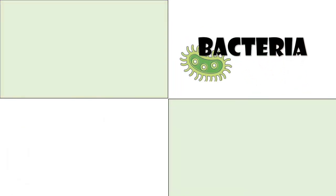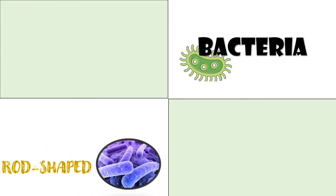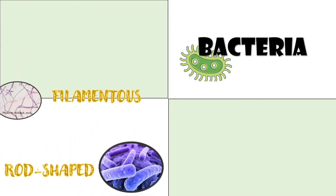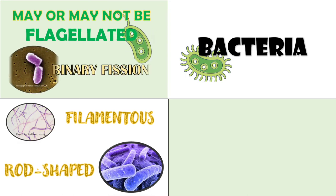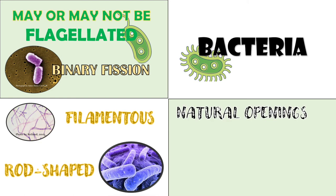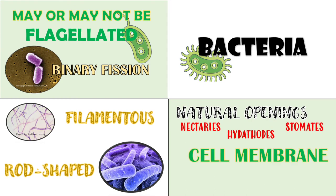Bacteria: Plant-infecting bacteria are either rod or filament-shaped, and may or may not be flagellated. They reproduce by binary fission. They usually do not penetrate the host directly; instead, they enter through natural plant openings such as nectaries, hydathodes, and stomates. Their cytoplasm is bounded by a cell membrane and cell wall made of peptidoglycan.